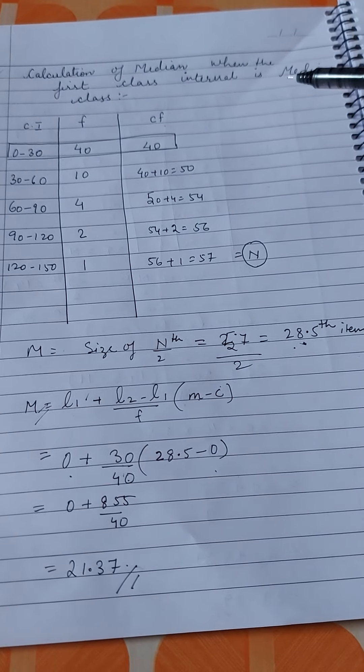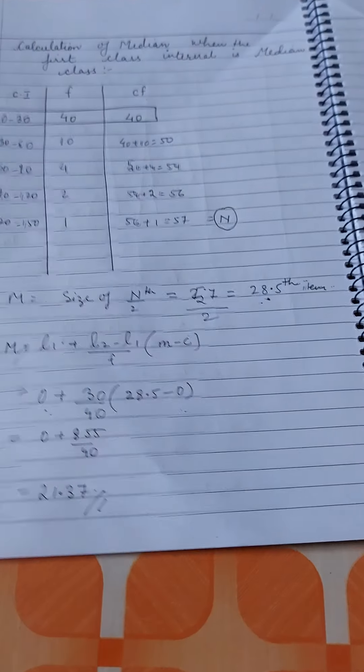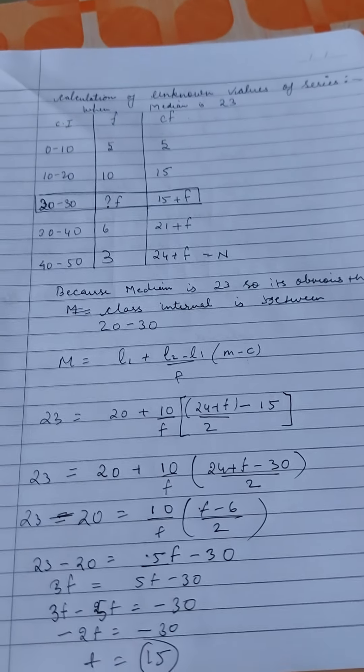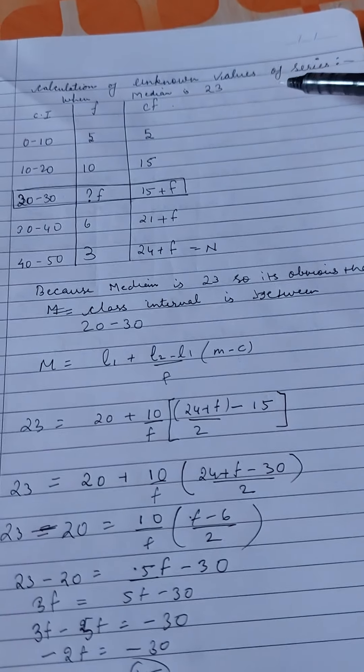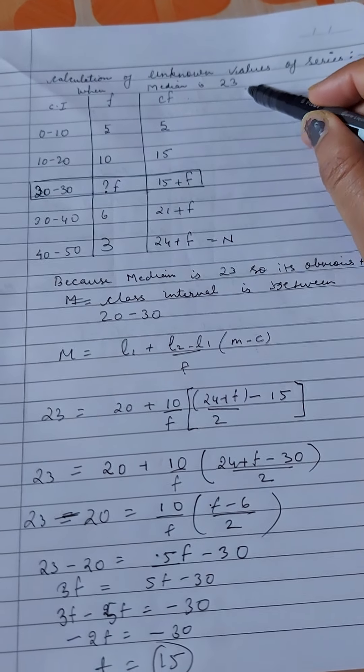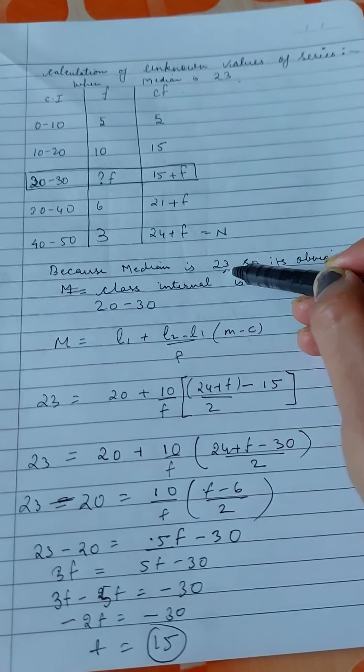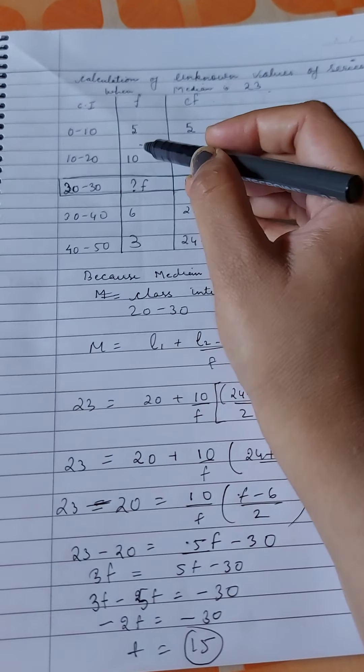Next question is calculation of unknown values of series when median is 23. Here median is given as 23. We don't have to find median, the median answer is already given to us.